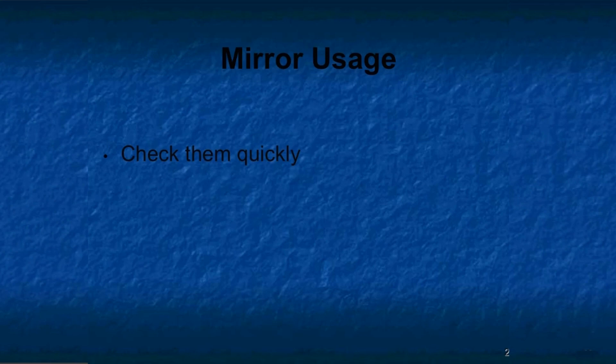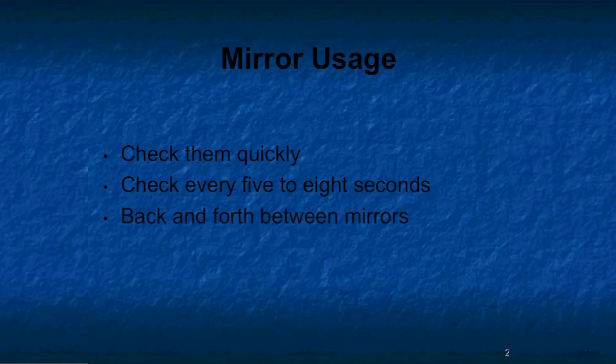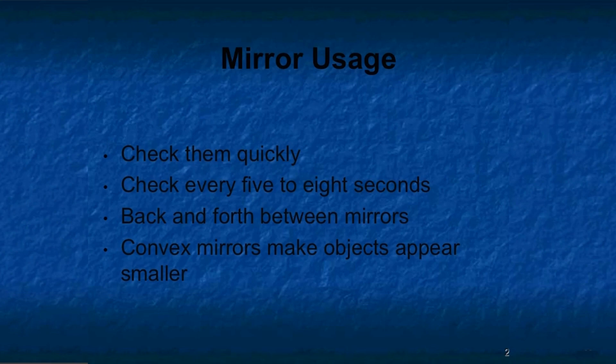Let's talk about some key principles in mirror usage. The key to using your mirrors is to check them quickly and consistently. You should check your mirrors every five to eight seconds and before you make a lane change or change your position in traffic. Do not focus on the mirrors too long or you're going to miss the action going on ahead. Scan back and forth between mirrors as you're checking them. The convex mirrors make objects appear smaller and farther away. Remember, even with all the mirrors on the bus, you will still have blind spots unless you move around in the driver's seat — commonly known as rocking and rolling.